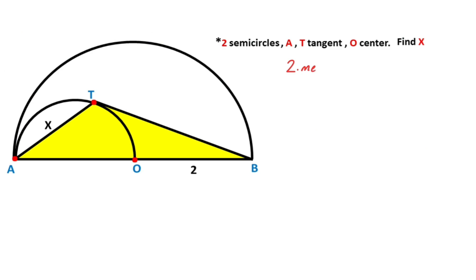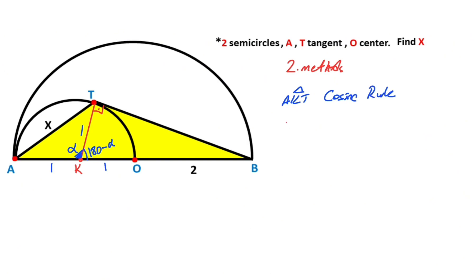Now we will calculate the value of x using the second method. First of all, let's call point K as the center of the small semicircle. If we connect point K and point T, here must equal 90 degrees because of the tangent. Let's call this angle alpha, so the adjacent angle must be 180 minus alpha. These are radii, so these lengths are 1 unit. Then, if you focus on this triangle and apply the cosine rule: x squared equals 1² plus 1² minus 2 times 1 times 1 times cosine(alpha).